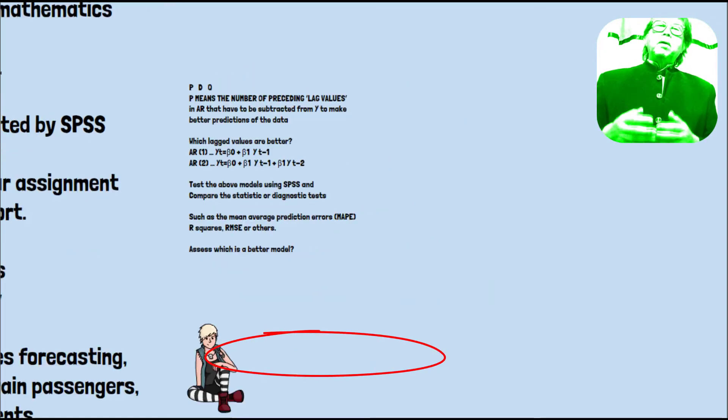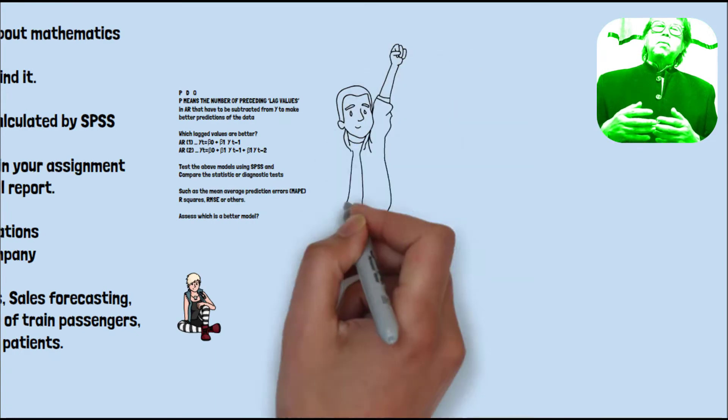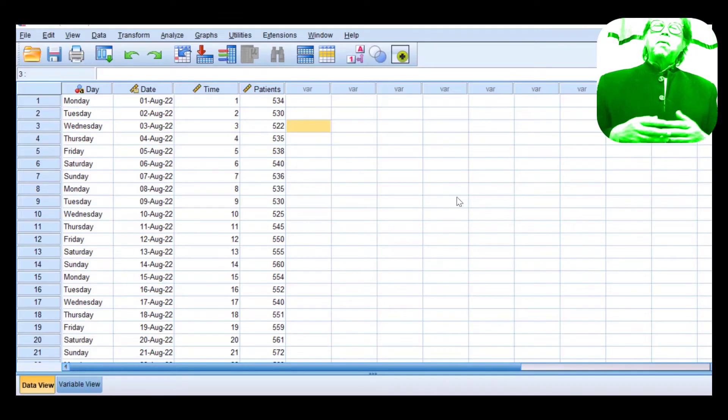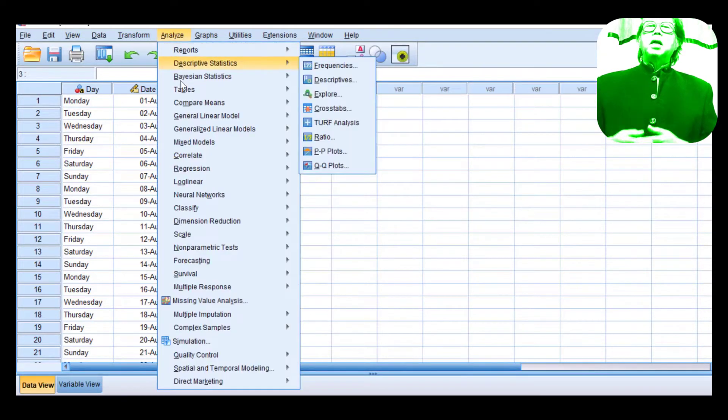So to perform AR2, you need to follow the following command: Click Analyze, Forecasting, Create, Traditional Models, then click OK.